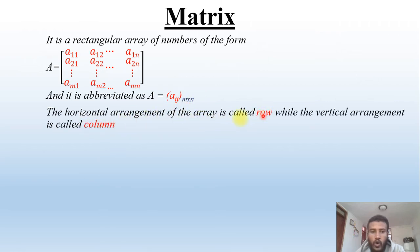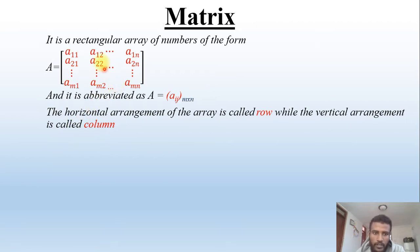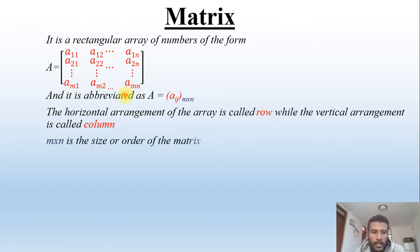The horizontal arrangement of the array is called the row. The vertical arrangement of the matrix is called the column. And m×n is the size or the order of the matrix.